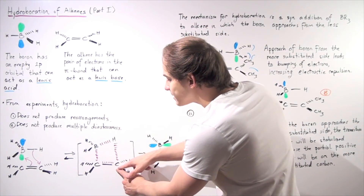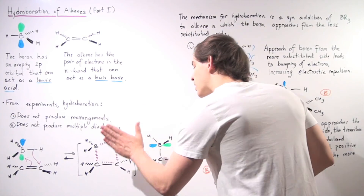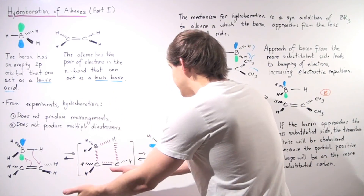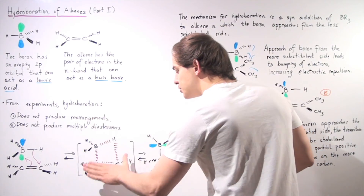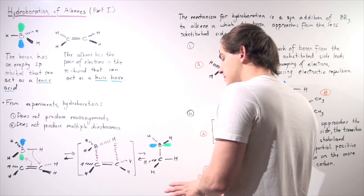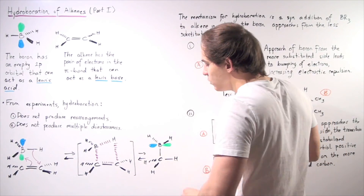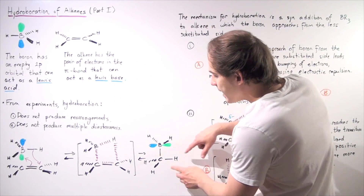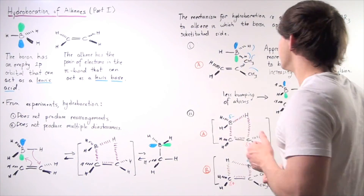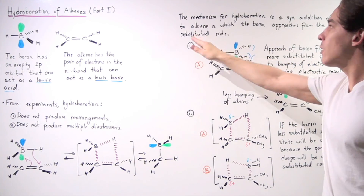Notice that this C–H bond is slightly longer than the C–B bond in the transition state, and that's because of a difference in electronegativity. The transition state is not a molecule that can be isolated — it exists only as an energy maximum for a very short period of time before converting to product. We go from reactant to product in which we have a C–B bond and a C–H bond formed. So the mechanism for hydroboration is a syn-addition of BH3 to our alkene.